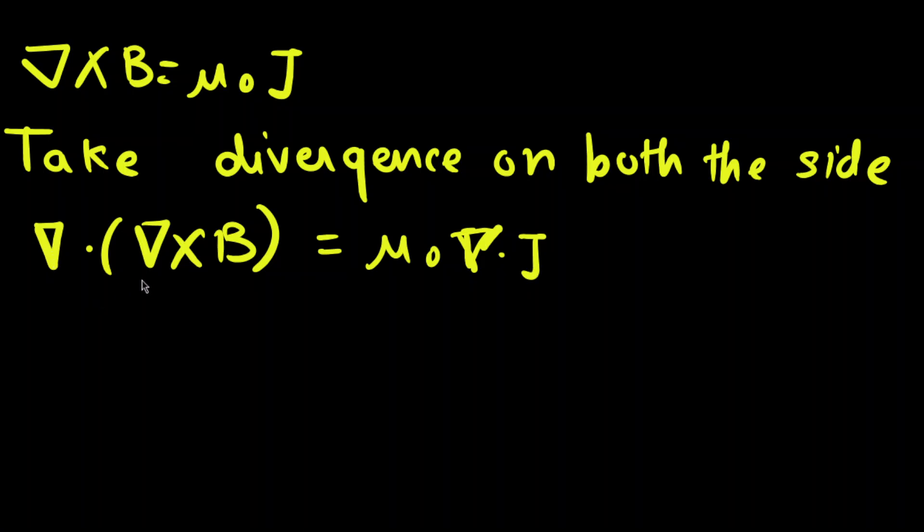As we know that divergence of a curl is zero, so the left-hand side of our equation becomes zero. Finally, what we get is that ∇·J = 0.